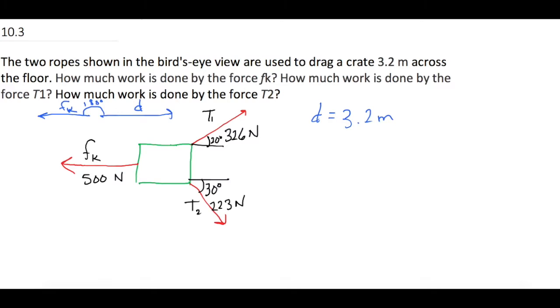Let's write the equation for work again. Work is equal to a force times the distance times the cosine of the angle between the force and the distance or direction.